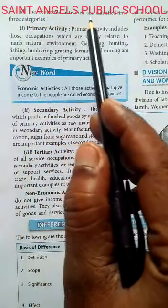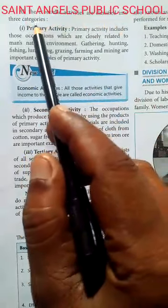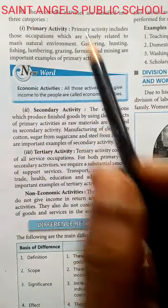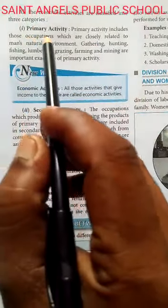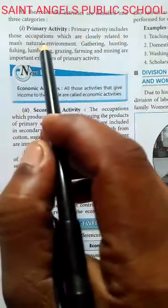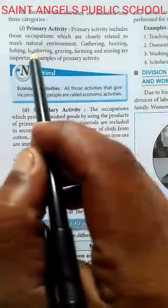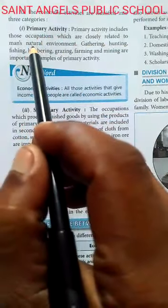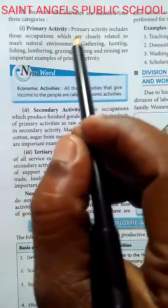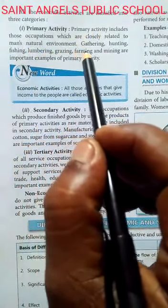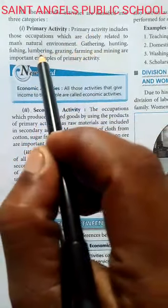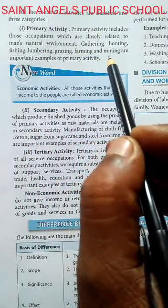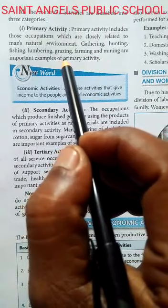All the economic activities are classified into three categories. जितनी भी economic activities हैं उन्हें तीन हिस्सों में बाँटा गया है। सबसे पहले primary activities — primary activities include those occupations which are closely related to man's natural environment. यह इंसान के प्राकृतिक वातावरण के साथ जुड़ी हुई हैं। इनमें खास तौर से gathering, hunting, fishing, lumbering, grazing, farming and mining शामिल हैं।